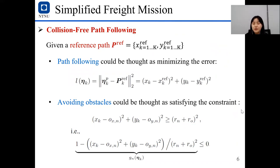For the simplified freight automation, we want to do collision-free path following and ultimate docking. First, let's say the collision-free path following. Given the reference path, the path following could be thought as minimizing this error. And for avoiding obstacles, it could be thought as satisfying these constraints. It means that distance between the ship and the obstacles should be greater than some distance. Or we can write this j function less than zero.